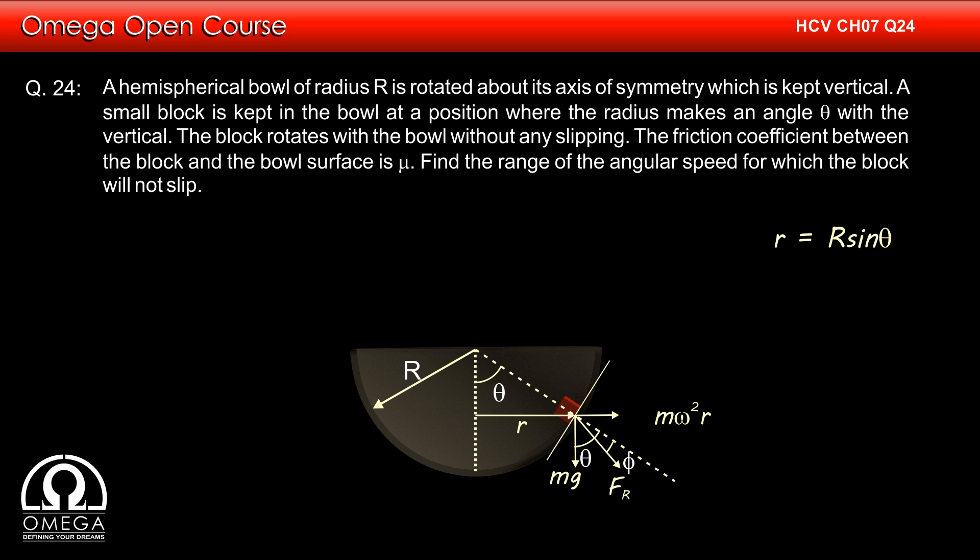As we have seen in the discussion on angle of friction, the block will slide when this resultant force makes an angle tan inverse mu with the normal. Let tan inverse mu be phi. So, the block will start moving downwards when fr makes angle phi with the normal in downward direction. This means fr makes an angle theta minus phi with mg, or m omega squared r divided by mg is equal to tan(theta minus phi).